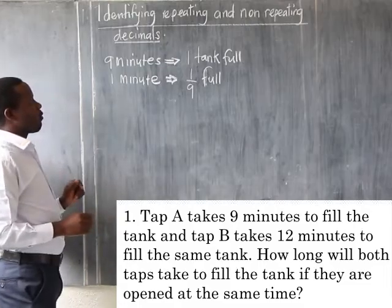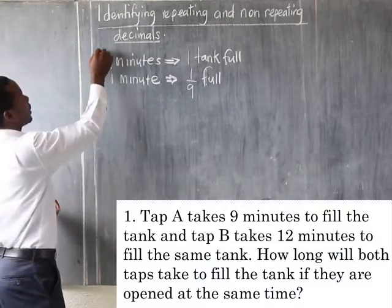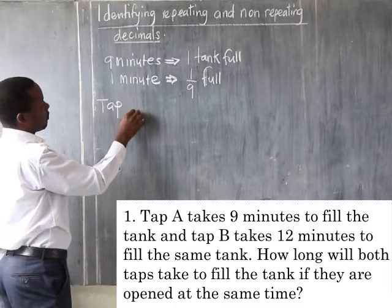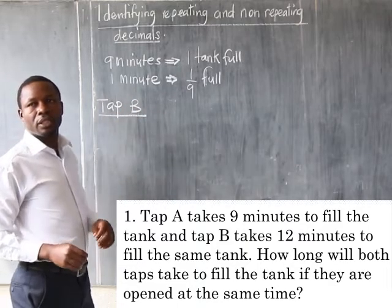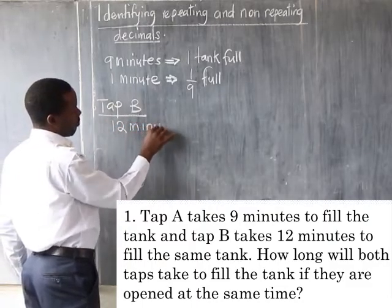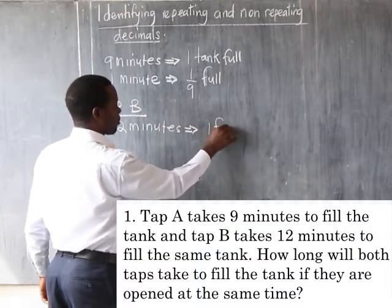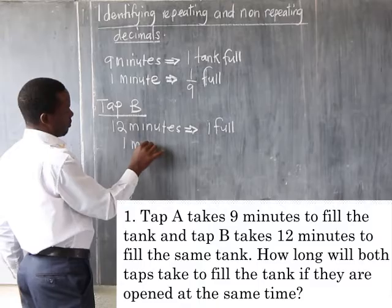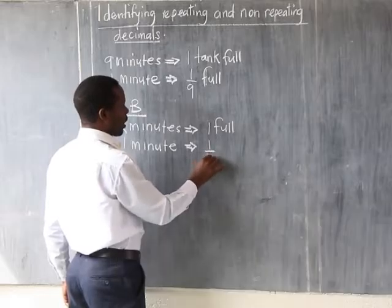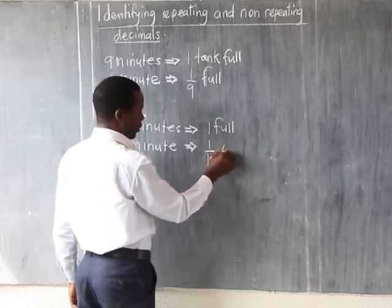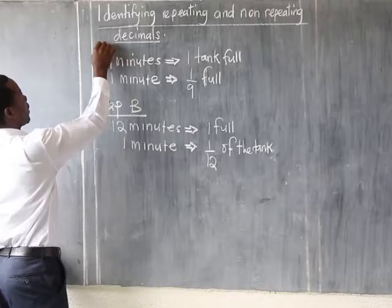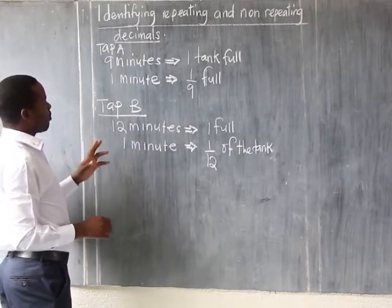So we have got the time taken for 1 minute. Now we look at another tap, tap B. Tap B takes 12 minutes to fill the same tank. That means in 12 minutes our tank is full. But we need to know what will be in the tank in 1 minute — it will be 1 out of 12 of the tank full. So we already have for tap A and for tap B in 1 minute.